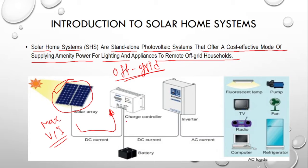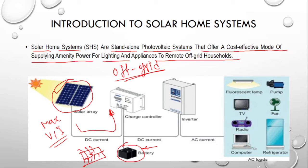The charge controller supplies and controls the voltage and current going into the battery. When the battery is full it cuts the supply to the battery, and when the battery is at a dead condition it resumes supplying solar power to the battery. The battery stores the power in the form of DC supply.